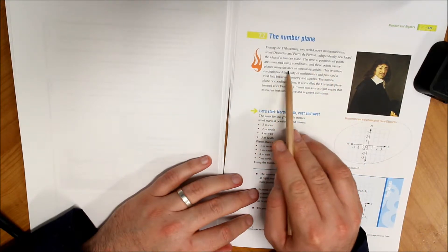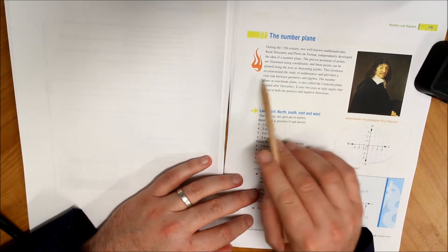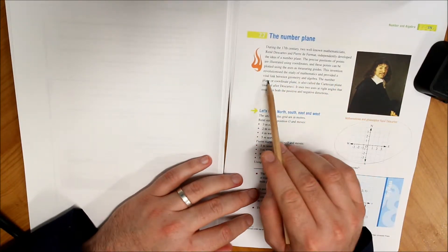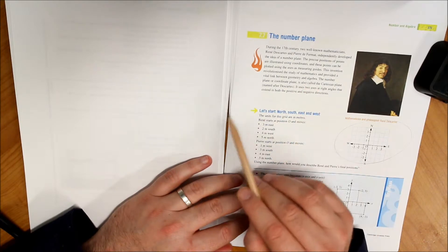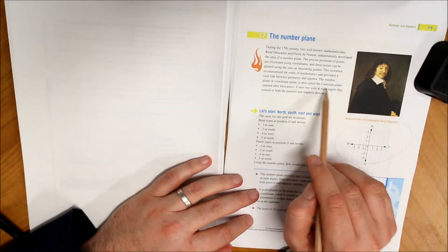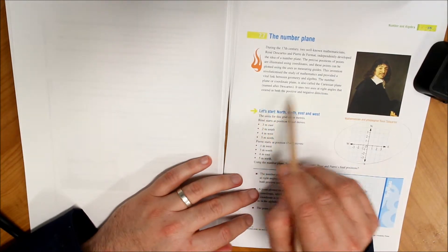The precise position of points are illustrated using coordinates, and these points can be plotted using the axes as measuring guides. This invention revolutionized the study of mathematics and provided a vital link between geometry and algebra.